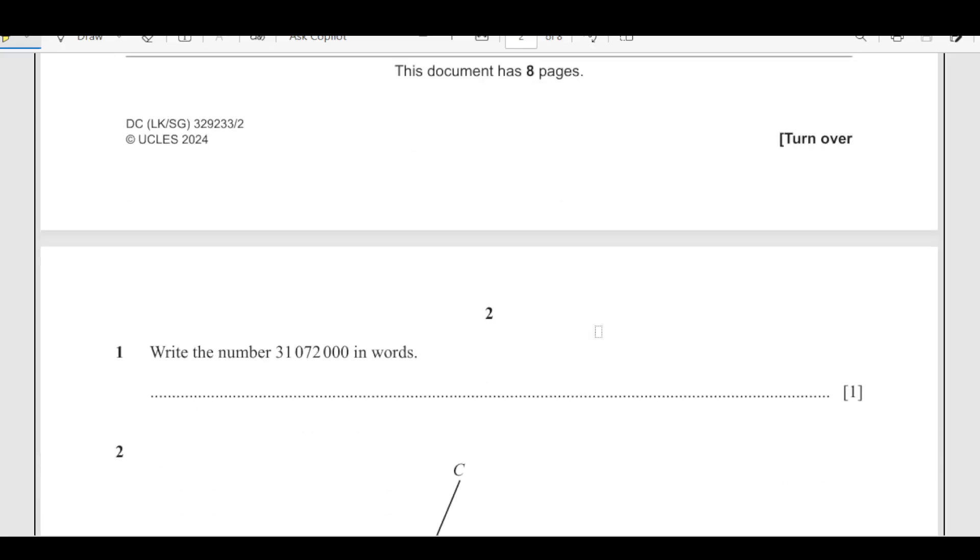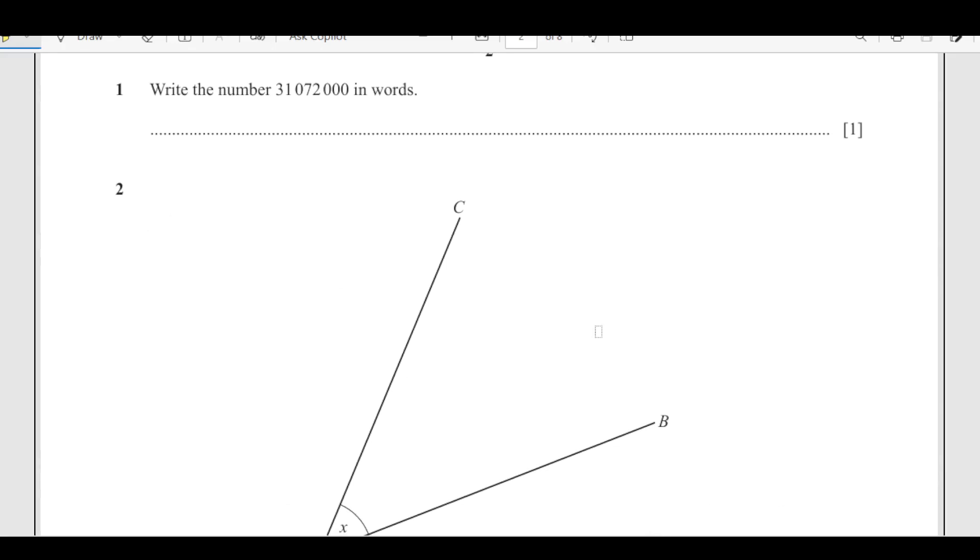You all know the instructions. The first question that we have here, write the number in words. We will make pairs of threes. This is thousands and this is millions, so this is 31 million and 72,000.